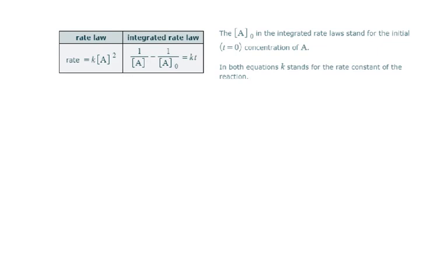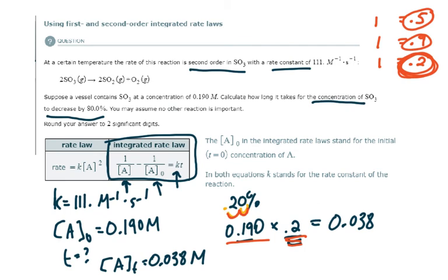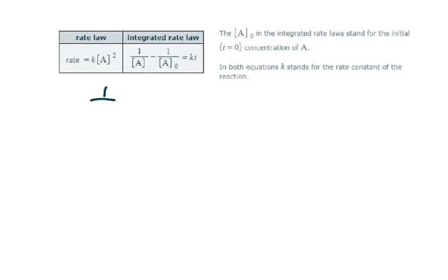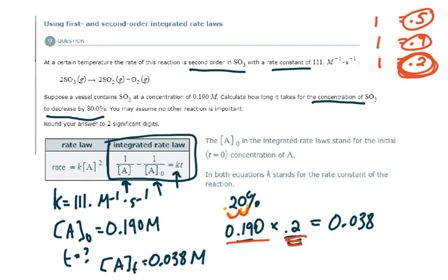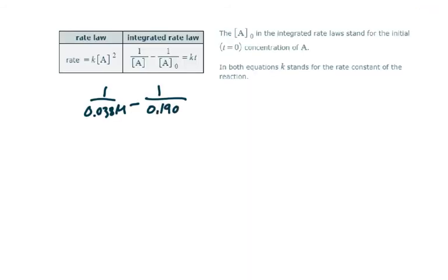All right. So now that we have that, we can now just plug into the integrated rate law for a second order reaction and solve for T. So A is 0.038, the initial concentration is 0.190, K is 111, and we have T. We want to find T.